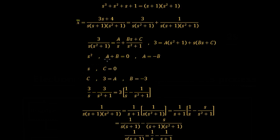Taking coefficients: s² gives a + b = 0, so a = −b. The coefficient of s gives c = 0. The constant term gives 3 = a, and therefore b = −3. So that means we can rewrite this as 3/s − 3s/(s² + 1), or factoring out 3: 3[1/s − 1/(s² + 1)]. That's the first section done.